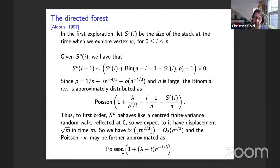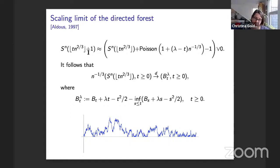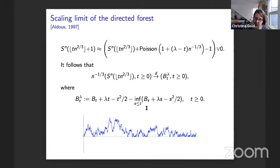At time t * n^{2/3}, the increment is approximately Poisson(1 + lambda - t * n^{-1/3}) minus one. This process has a scaling limit: on the timescale n^{2/3} and rescaling space by n^{-1/3}, we get in the limit a Brownian motion with instantaneous drift (lambda - t), which integrates to give lambda*t - t^2/2, reflected at its running infimum. This process B_lambda(t) has a parabolic drift becoming more negative for large t, corresponding to stochastically smaller excursions as we go further.